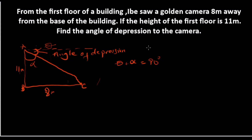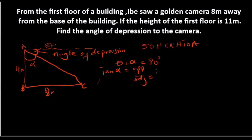From our formula — SOHCAHTOA — you'll agree that with respect to alpha, I have the opposite, which is 8 meters (that's line BC), and I also have the adjacent. So we'll be thinking of tan. Tan of alpha equals opposite over adjacent, which is equals to 8 over 11. 8 divided by 11 from my calculator is the same thing as 0.7273.